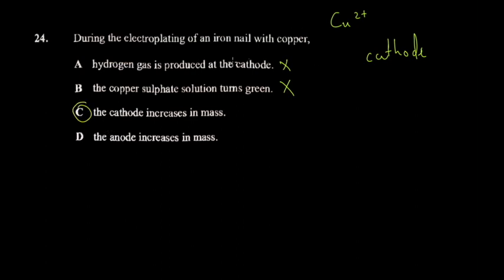The key was identifying where copper would be deposited. The copper ions are cations, so they get deposited at the cathode, and the cathode increases in mass. The sulfate ions are anions. I'll do a video explaining these electroplating processes in more detail.